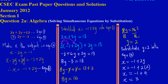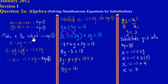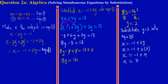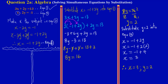Now all we have to do is state our answers. Therefore, x is equal to 3 and y is equal to 2. That's how you solve a pair of simultaneous equations by substitution.